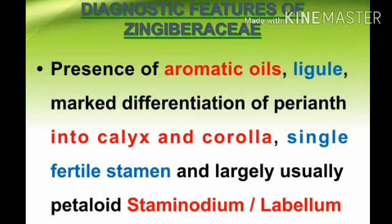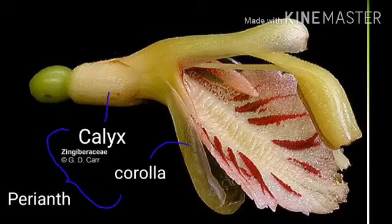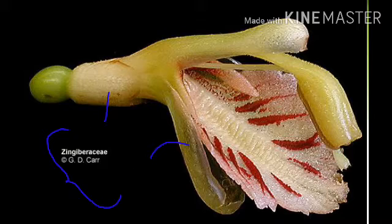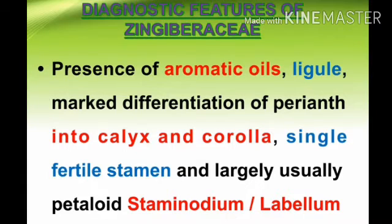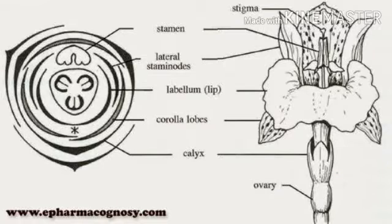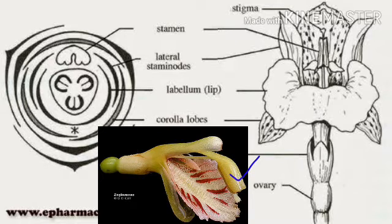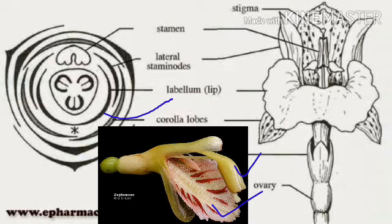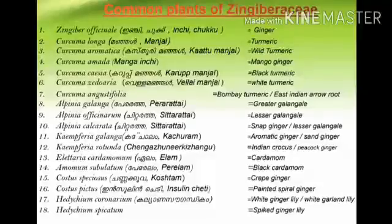There is a differentiation of calyx and corolla — the perianth lobes are differentiated into calyx and corolla. In Zingiberaceae there are six stamens arranged in two whorls. The innermost posterior stamen only is the fertile stamen, and all other stamens are sterile. The other two lateral stamens of the inner whorl are united to form a petaloid beautiful structure called the staminodium or labellum, which is formed by sterile stamens.